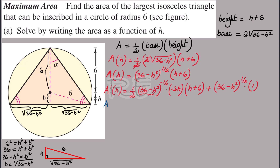A prime of h is equal to: negative 2 over 2 gives negative 1, so it's negative h times h plus 6 over 36 minus h squared to the one half, plus 36 minus h squared to the one half.